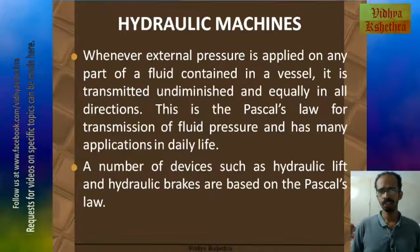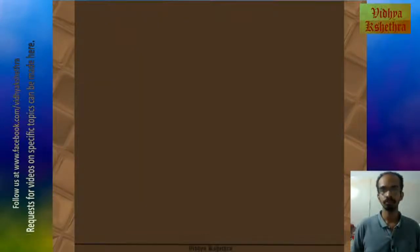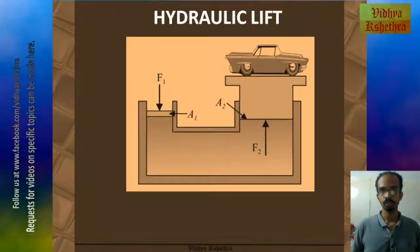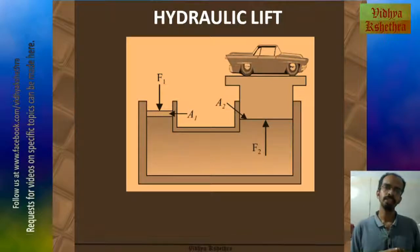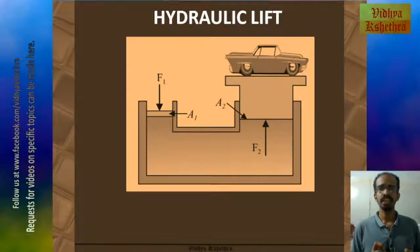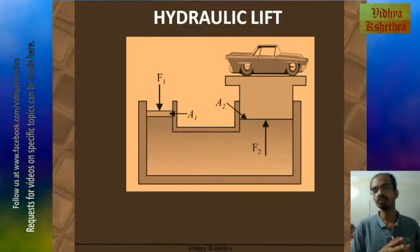Now we can see as an example, the working of the hydraulic lift. This is the schematic diagram of a hydraulic lift. In this, a force F1 is applied at a small cross-sectional area A1, which in turn causes a greater force F2 by which the car is raised. This is a consequence of Pascal's law.